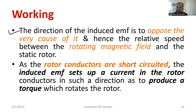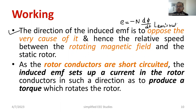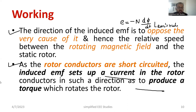The direction of induced EMF is to oppose the very cause of it — the relative speed between the rotating field and the rotor. The direction of induced EMF equals −N into dφ/dt. This is called Lenz's rule. Furthermore, as the rotor conductors are short-circuited, an EMF is produced and a voltage is established. So current starts flowing through the rotor conductor, and the induced EMF sets up a rotor current. This rotor current produces a torque which rotates the rotor.